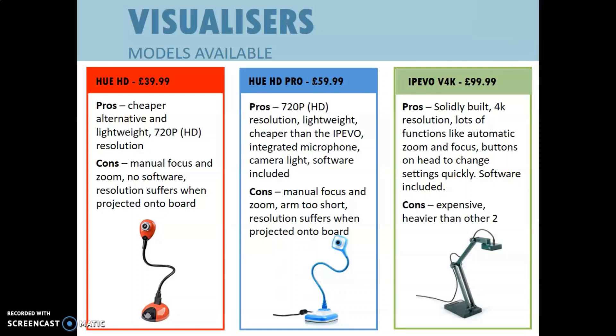The Hues are very good in their own right, but I just find for physics and science the 720 resolution isn't sharp enough for some of the things that you want to do, and the manual focus and zoom doesn't help either. The Hue HD Pro and the ipevo v4k have software included, and both software packages are very good. However, the Hue HD does not come with software, and I had issues with how compatible it was with my laptop.